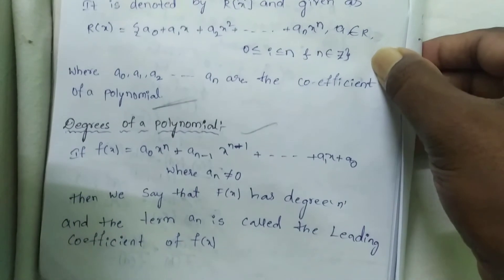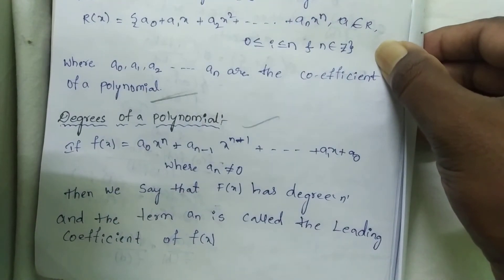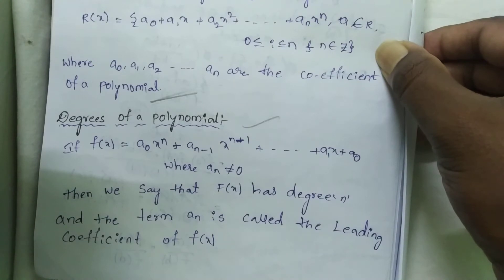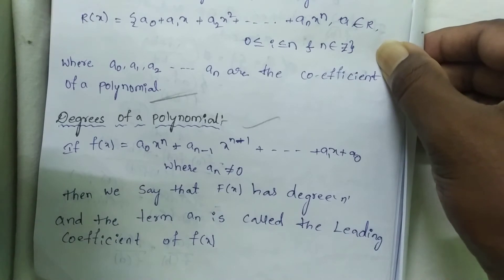Degree of a polynomial: If f(x) = aₙxⁿ + aₙ₋₁xⁿ⁻¹ + ... + a₁x + a₀ where aₙ ≠ 0, then we say that f(x) has degree n, and the term aₙ is called the leading coefficient of f(x).